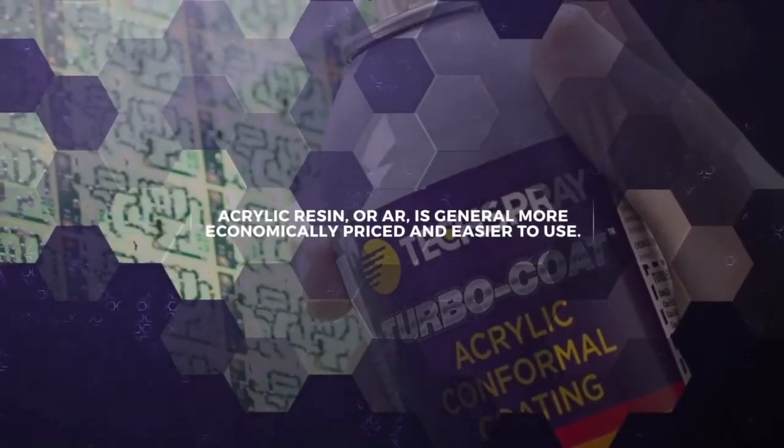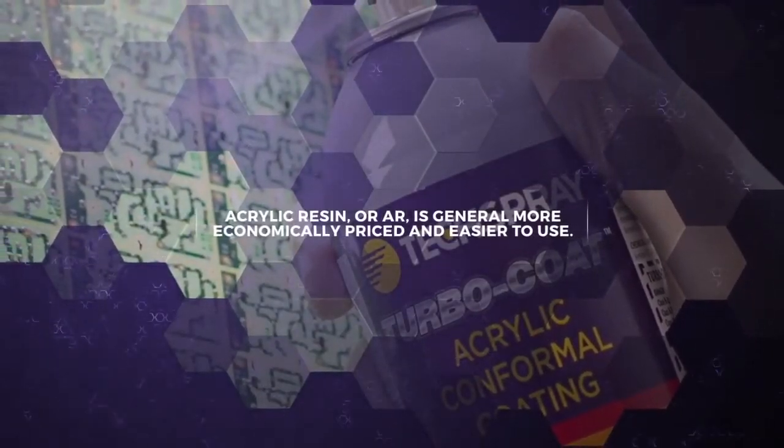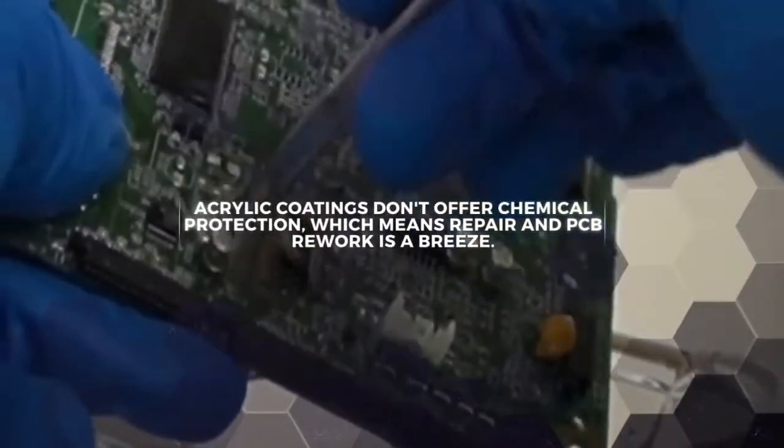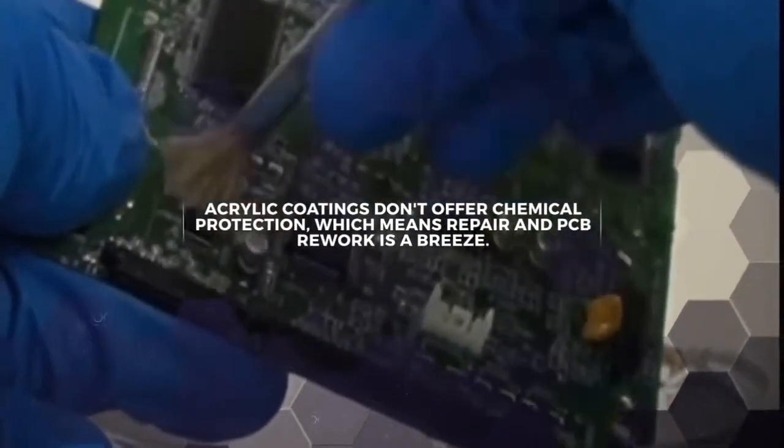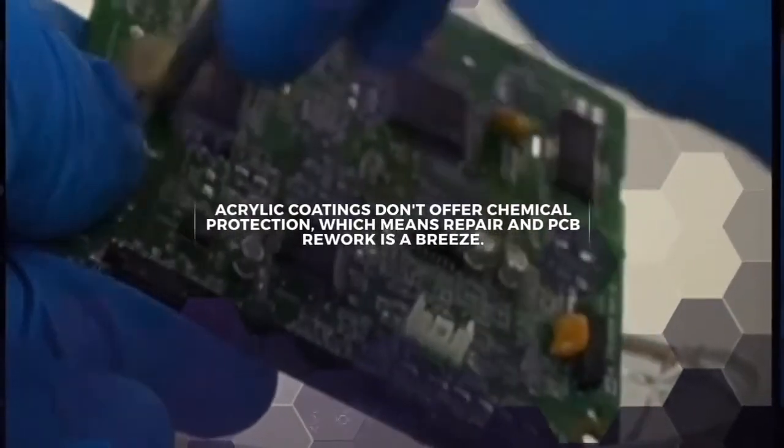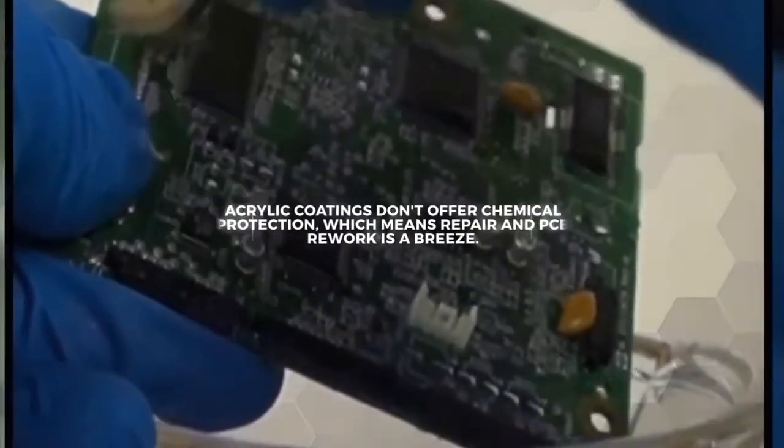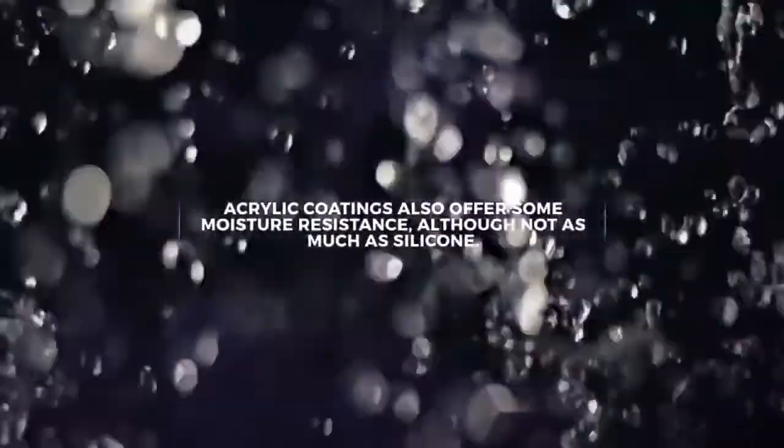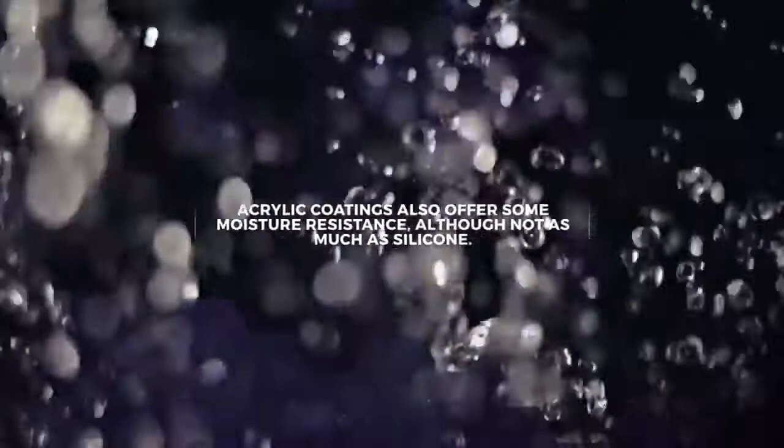Acrylic resin, or AR, is generally more economically priced and easier to use. It dissolves easily in common solvents, so while it doesn't offer much protection from chemicals, it makes circuit assembly rework fast and easy. Acrylic coatings also protect from moisture, just not as effectively as silicone.